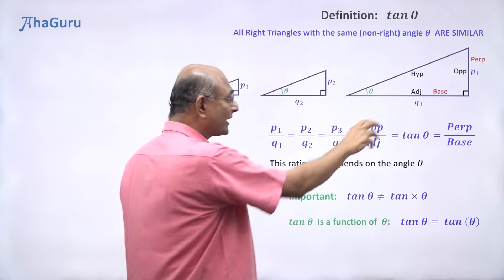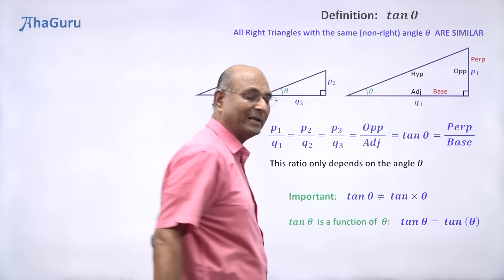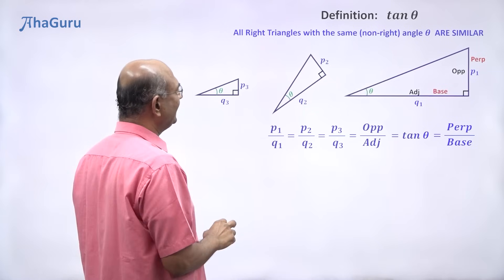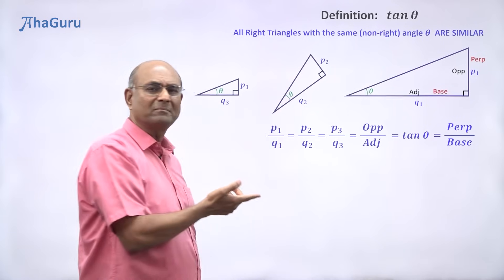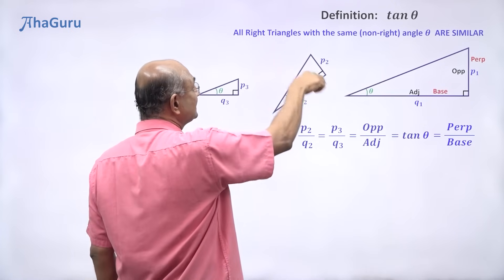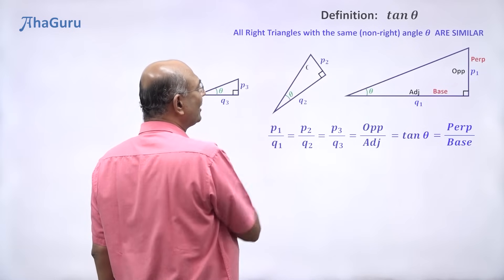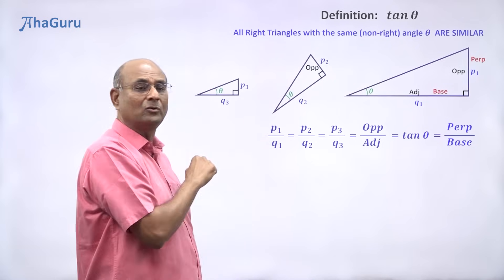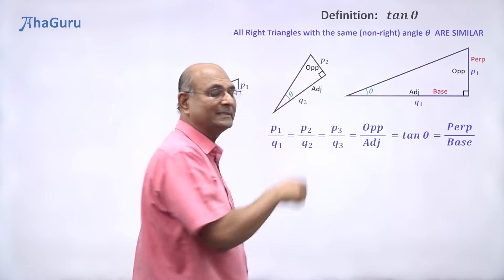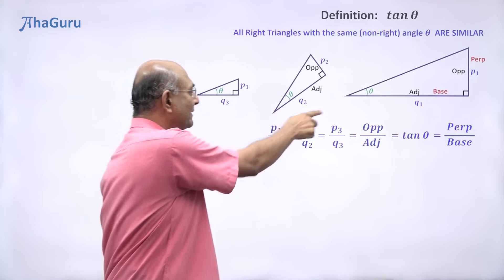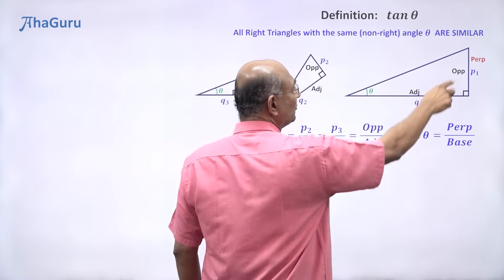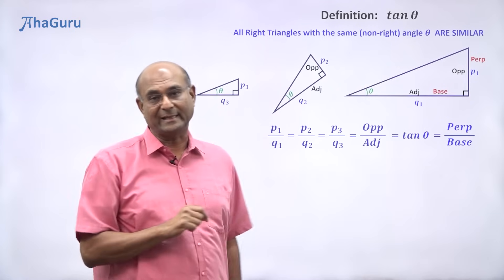In some books you will find that the adjacent side is called the base and the opposite side is called the perpendicular, so people write tan theta as perpendicular by base. That makes sense when the triangle is horizontal. But suppose I tilt the triangle around — now how can you call it the base if it is not horizontal? That is why I prefer to call it opposite by adjacent as tan theta. Though you should remember that in certain books, you may find perpendicular by base as the definition for tan theta.